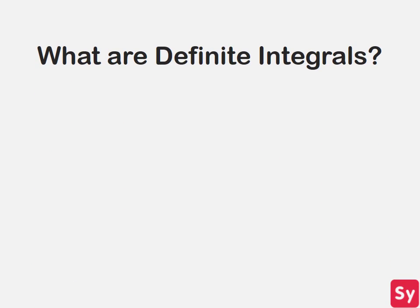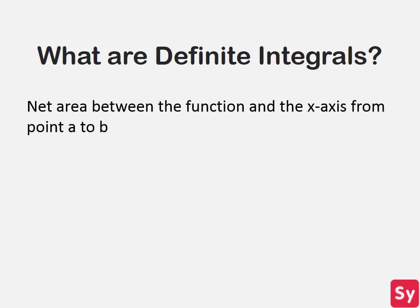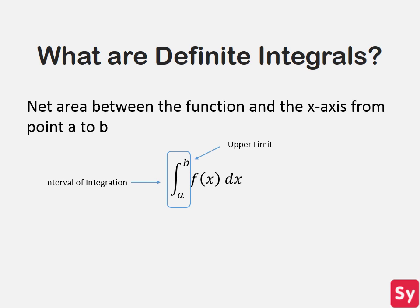Let's talk a bit more about what definite integrals are. Definite integrals are the net area between a function and the x-axis from point a to b. We see definite integrals written in this form. The only difference between definite and indefinite integrals in the format is that the definite integrals include an interval of integration. b is called the upper limit and a is called the lower limit. This indicates the domain of the area under the function.